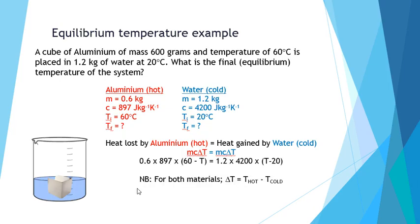So we substitute our values in. The mass of 0.6 kilograms for aluminum is entered in. The specific heat capacity of 897 joules per kilogram per kelvin is entered in. And the change in temperature is put in. Note that we start with the higher of the temperatures, which was 60 degrees for the aluminum, and it will drop down to a cooler temperature T, the final equilibrium temperature. On the other side of the equation we have a mass of 1.2 kilograms for the water, specific heat capacity of 4200, and again a change in temperature.